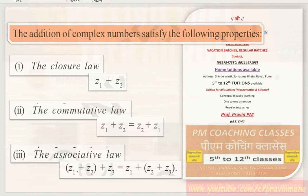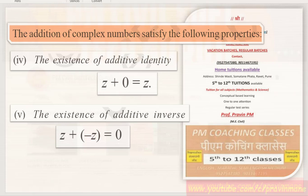Associative law means z1 plus z2 in bracket plus z3 equals z1 plus bracket z2 plus z3. This quantity is called the associative property in mathematics. For additive identity: if we add something to any number and the answer remains the same number, that quantity is called the additive identity. Zero is the additive identity — adding zero to anything gives the same result.